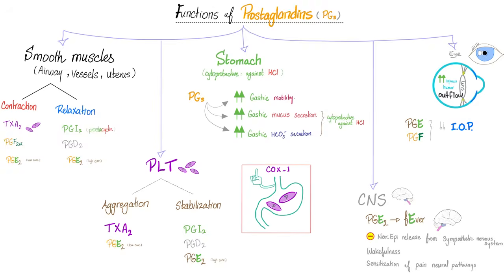Prostaglandins on the stomach: they increase gastric motility, they increase mucus secretion — not HCl — only the mucus, which protects you from the acid. They also increase bicarbonate secretion. This is why prostaglandins are cytoprotective — they protect the stomach. And the prostaglandins that protect the stomach are made by COX-1. In the brain, prostaglandin E is for fever and pain. Prostaglandins in the brain inhibit norepinephrine release from the sympathetic nervous system. They make you awake and they help you feel pain — you're alert and you're in pain. That's how prostaglandin E2 rolls.